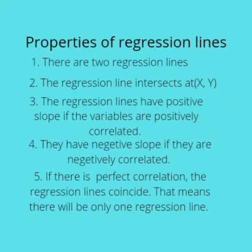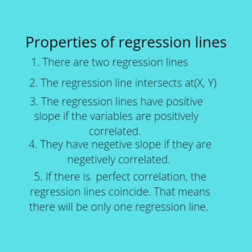Next, the properties of regression lines. There are two regression lines. The regression lines intersect at the point (x̄, ȳ), where x and y are the two variables — one line is the x variable and one is the y variable. The regression lines have a positive slope if the variables are positively correlated, and a negative slope if they are negatively correlated. If there is perfect correlation, then the regression lines coincide — that is, the two regression lines become the same single line.